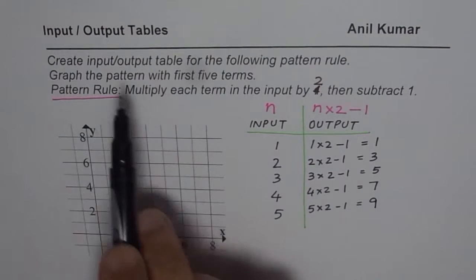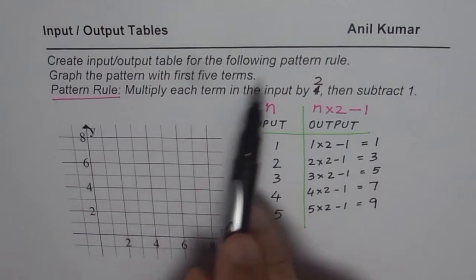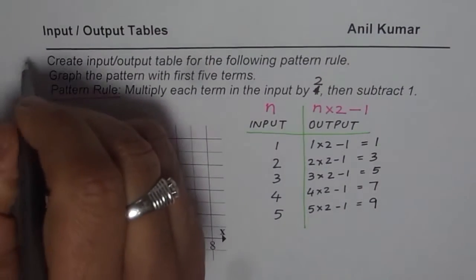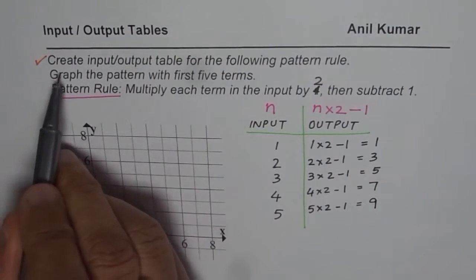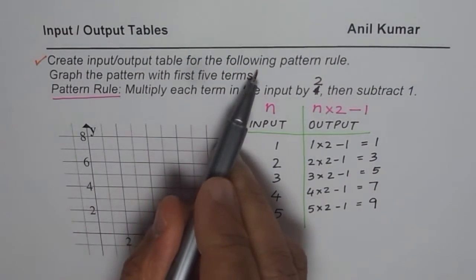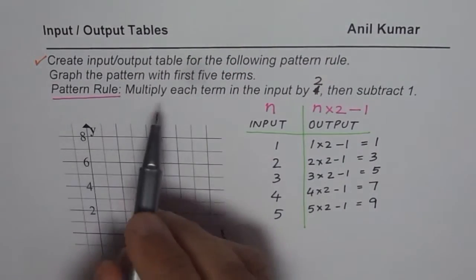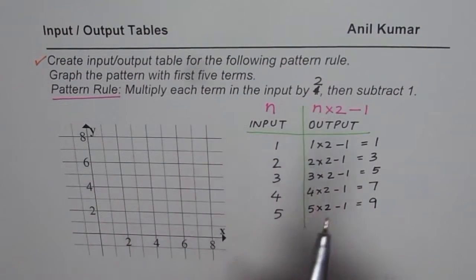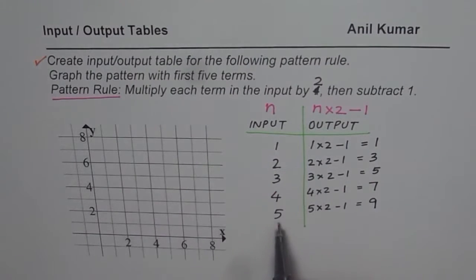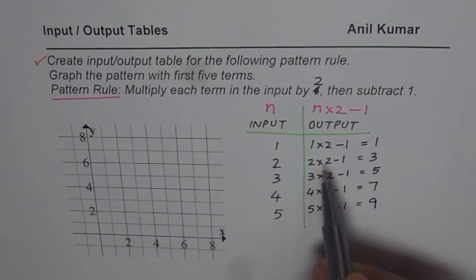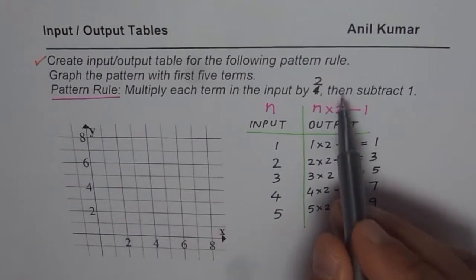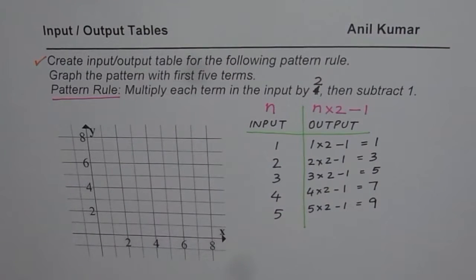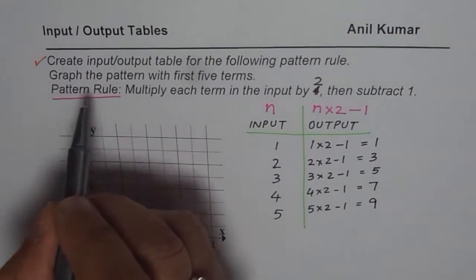So we have done the input output table from this pattern rule, so that is the first part which we have just completed. So create input output table from the following pattern rule, pattern rule was multiply each term in the input by 2, so that is what we did, 1, 2, 3, 4, 5 were the first 5 terms, multiplied by 2 then subtract 1.